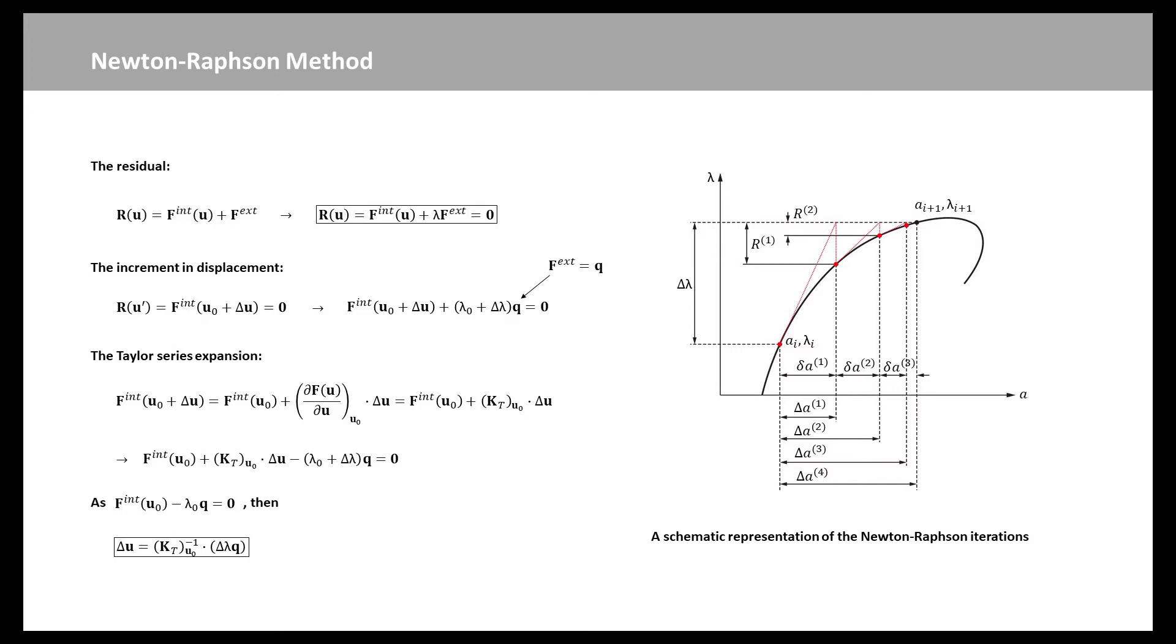Then we update the displacement u₀ by u' equal to u₀ plus delta u. Then we have a new expression of the system. In the new expression, F(u') can be expressed in terms of F(u₀) by a Taylor series expansion.